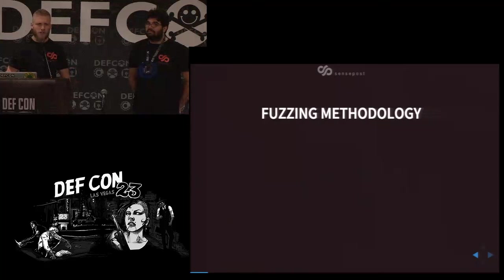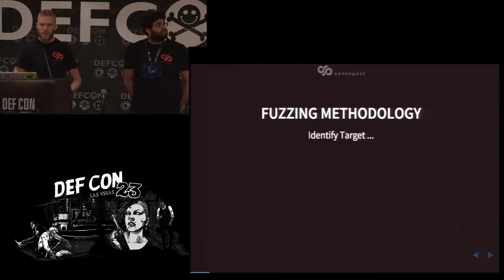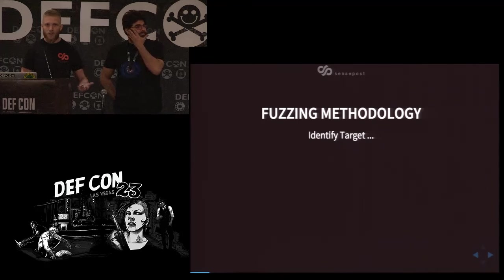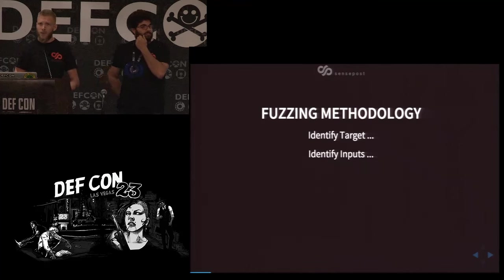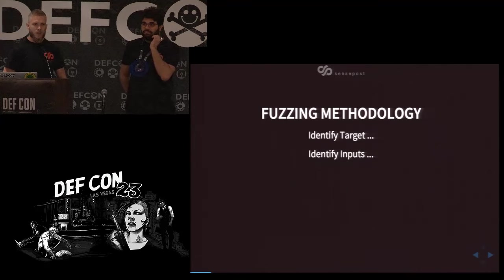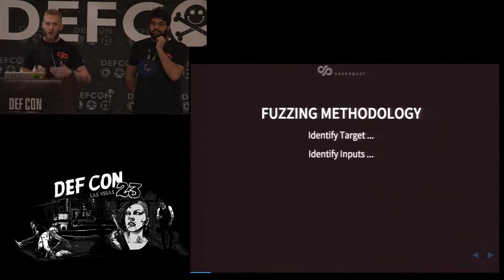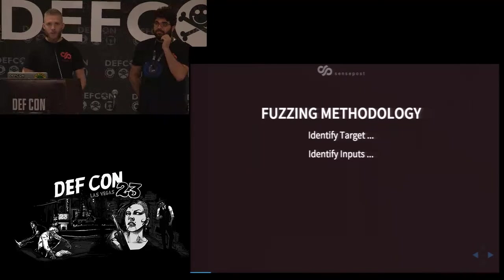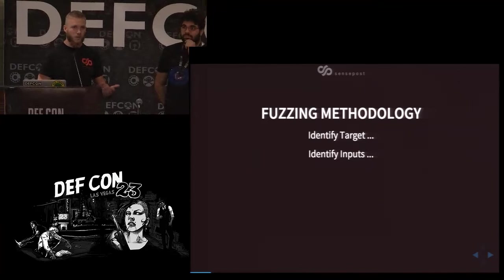One thing that has stayed constant through the years is the fuzzing methodology. It basically consists of five steps. Step one: identify your target. What are you looking at fuzzing? Is it a browser? Is it the network stack or anything like that? Once you've identified your target, you need to identify inputs to this target. This can be done by using the application, reviewing documentation, or by reverse engineering the application and finding hidden inputs that weren't known before.